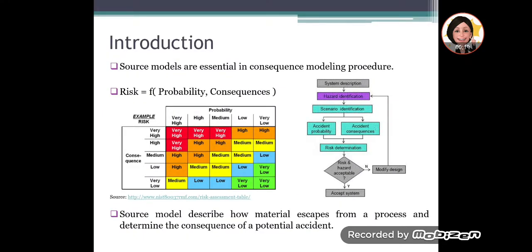Source models are essential in consequent modelling procedure. If you notice, risk assessment is actually a function of probability and consequence. So this is the table that you usually do and there is probability and consequence that is required to assess a risk. To assess this consequence, we need source model. Source model will describe how material escapes from a process and determine the consequence of a potential accident from the escape of the material.